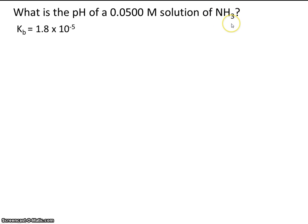Now, ammonia, that's one of our weak bases. You also know that because they give you a Kb value. Any time you have a Ka or Kb value, it means you're dealing with a weak acid or base.